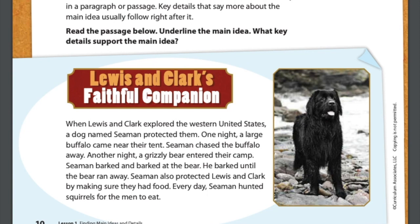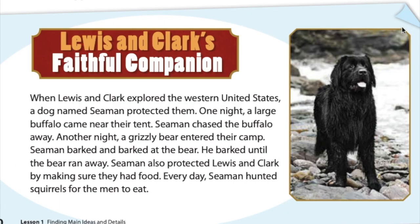Take a moment and underline what you think might be the main idea. The title of a selection often helps us find it — it's called Lewis and Clark's Faithful Companion, and their faithful companion was the dog, which is also why we have a picture here. So our main idea is probably something about their faithful companion, the dog named Seaman. We have 'a dog named Seaman protected them' — that's our main idea. Are there key details that support that? A buffalo came near their tent and was chased away; a grizzly bear entered and was barked away; and Seaman protected them by making sure they had food. Those are each key details that show that Seaman protected the explorers.